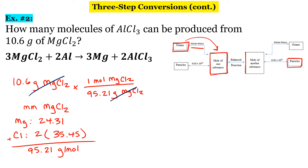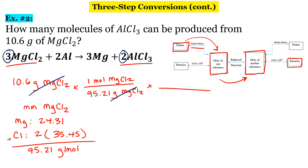The next step is no different — moles to moles, so we're going to use that mole ratio. We're going from magnesium chloride to aluminum chloride, and our ratio is three to two. So for every three moles of magnesium chloride, we have two moles of aluminum chloride.